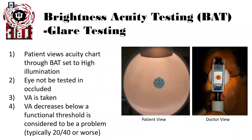How you perform BAT glare testing: the patient views an acuity chart through the BAT, typically set to high illumination. The eye not being tested should be occluded. This is all done in a dark room. VA is then taken to determine the amount of decrease in visual acuity compared to the initial visual acuity. VA decrease below a functional threshold — typically 20/40 — is considered to be a problem for a patient and may affect their daily life.